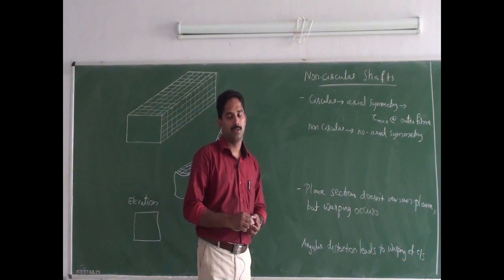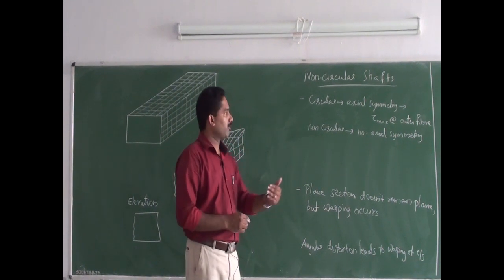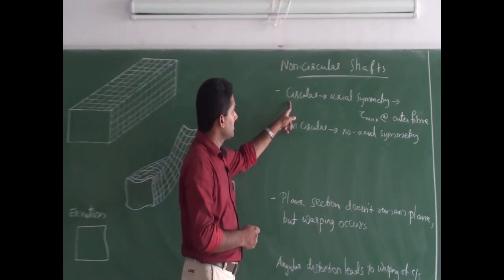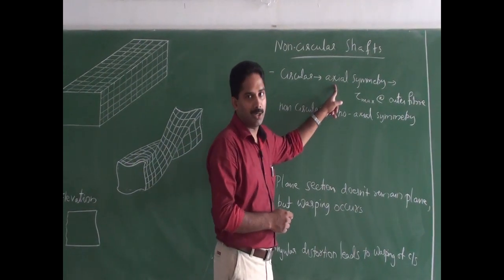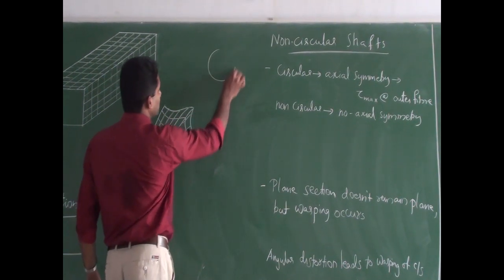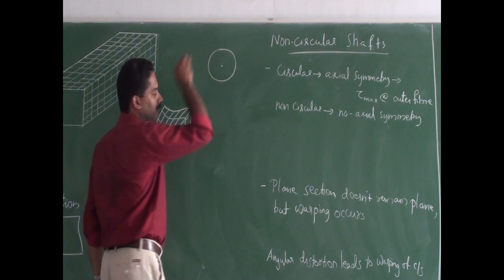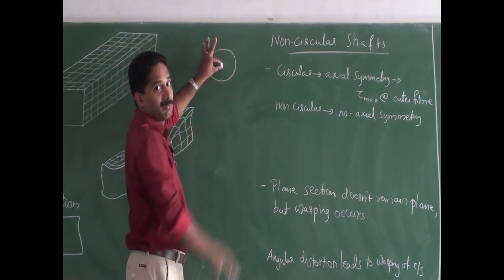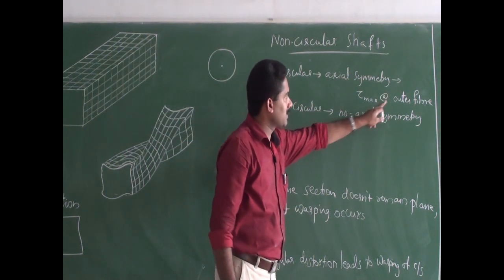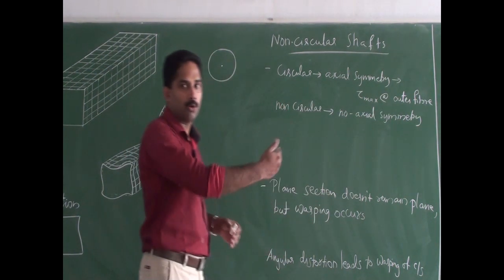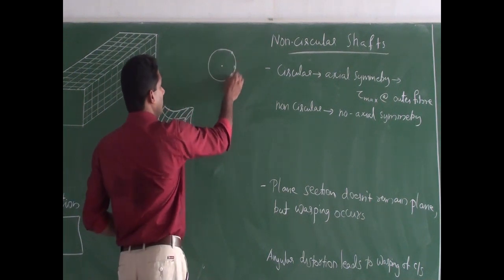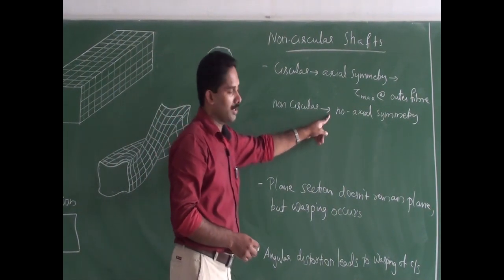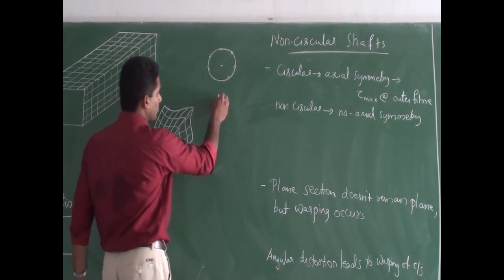Now, comparing the circular shaft to the non-circular shaft, the first key difference is that the circular shaft is axially symmetric. Because of this axial symmetry in the cross-section about the central orbital axis, the maximum shear stress occurs at the outer fiber.